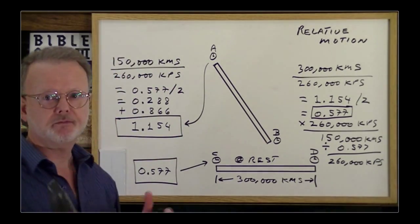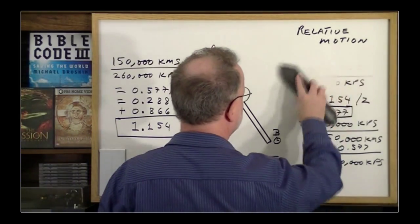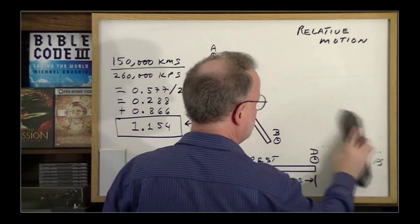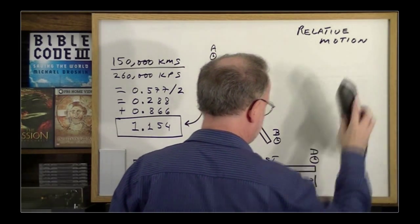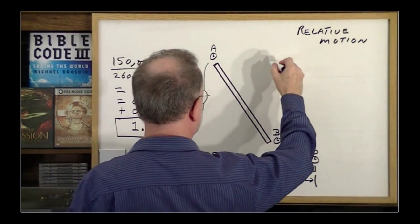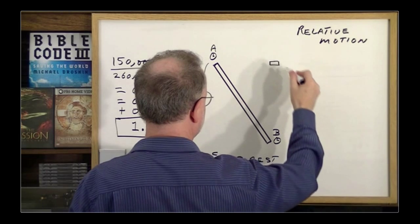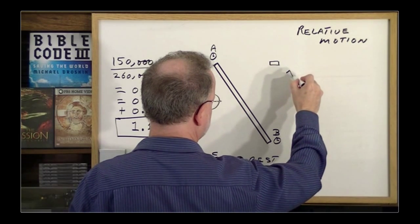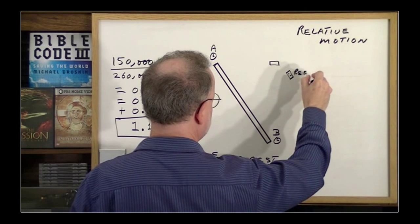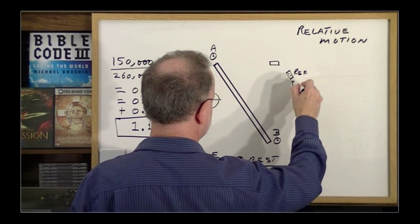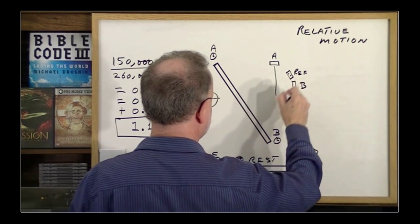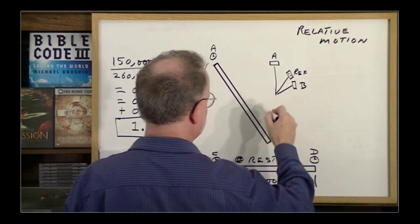Now, to add to this confusing situation, imagine we take, again, we have our 300,000 kilometer spaceship, and then there's another one going in this direction, Mr. Reference, and another one going in this direction. We'll call this one A, this one B.